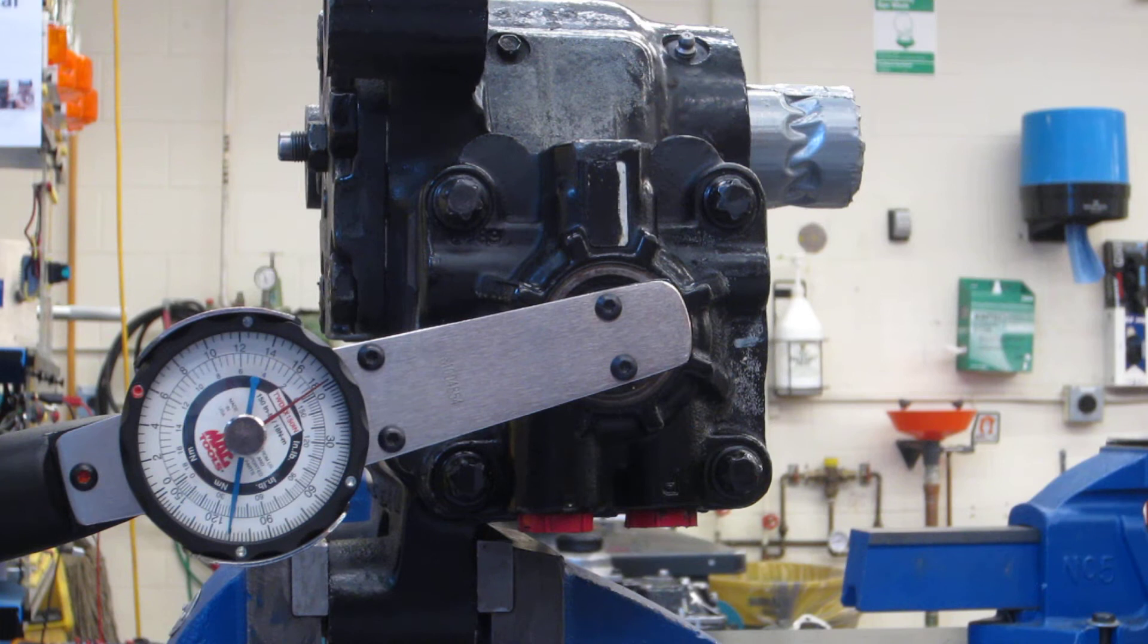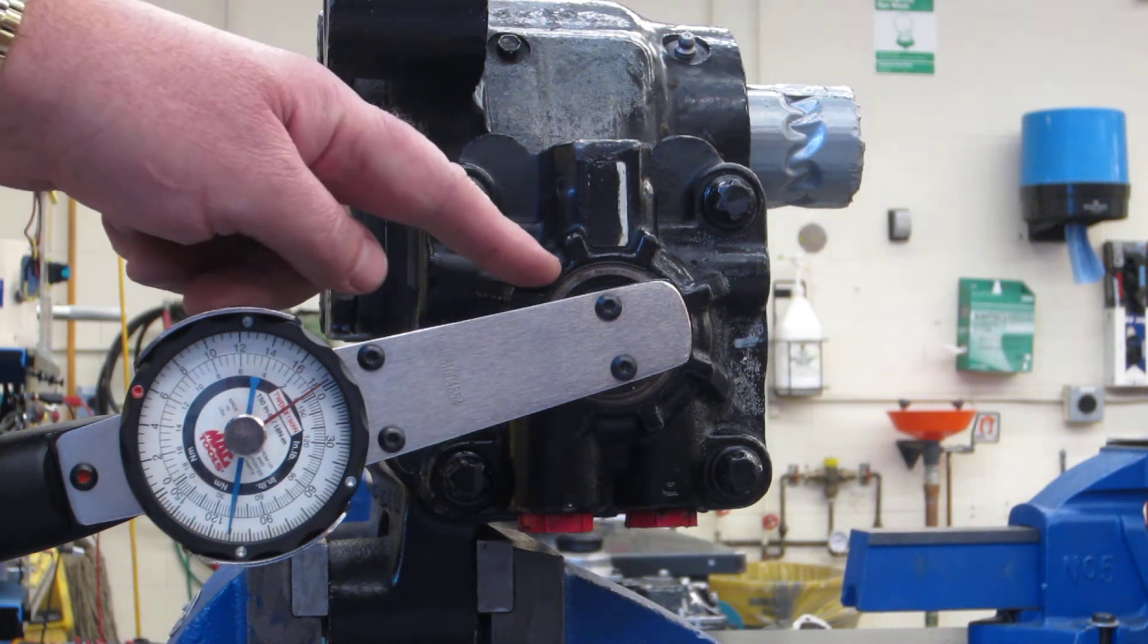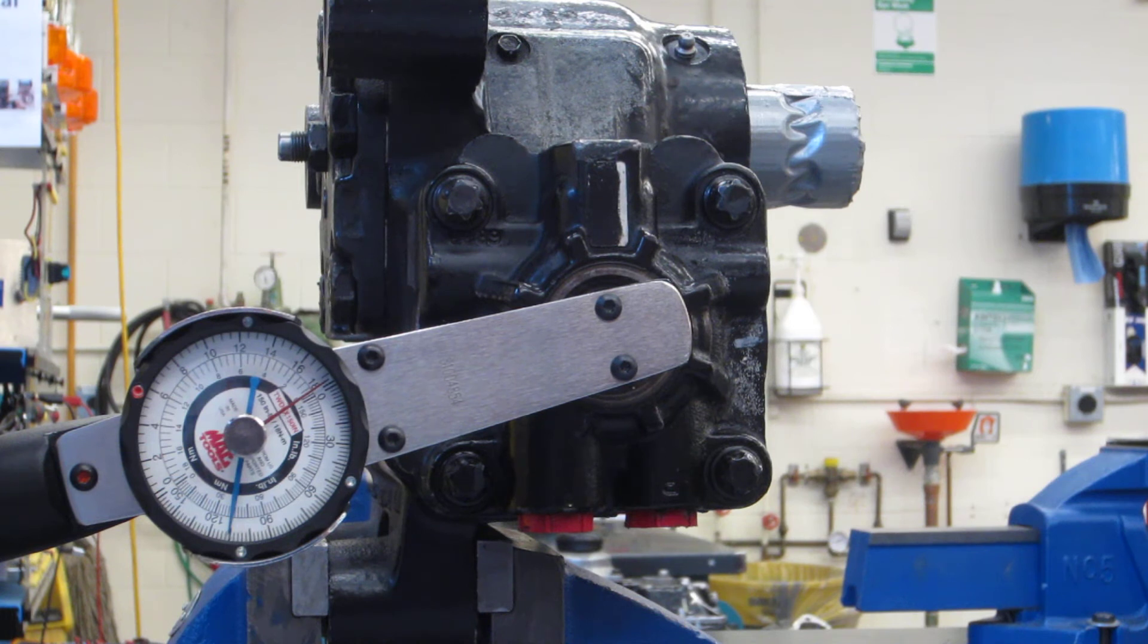By measuring the rolling torque, we're able to determine the amount of preload on the bearings on the input shaft or the valve assembly.